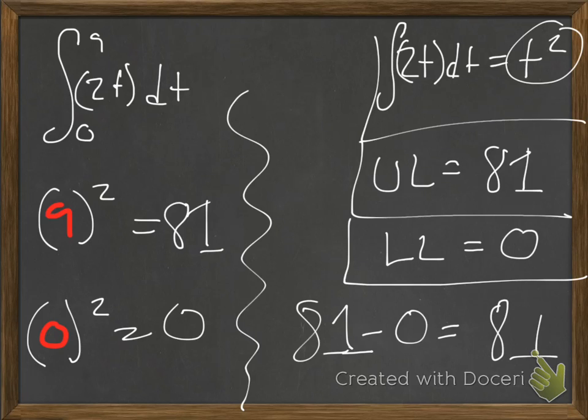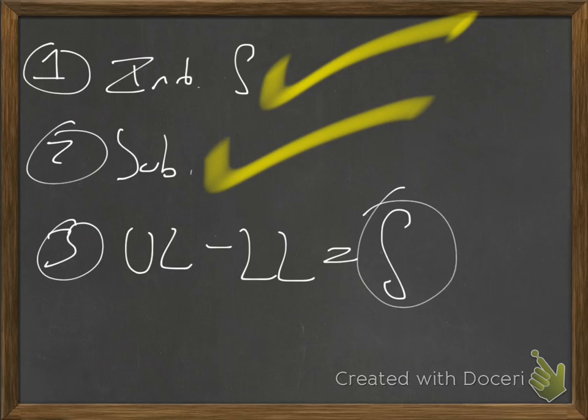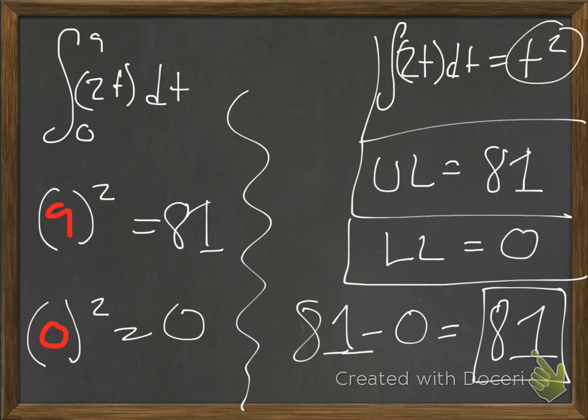Yeah. So I think that's it. So 81 is our final answer here. We have taken care of upper limit and lower limit subtraction. So now, look, we're done.